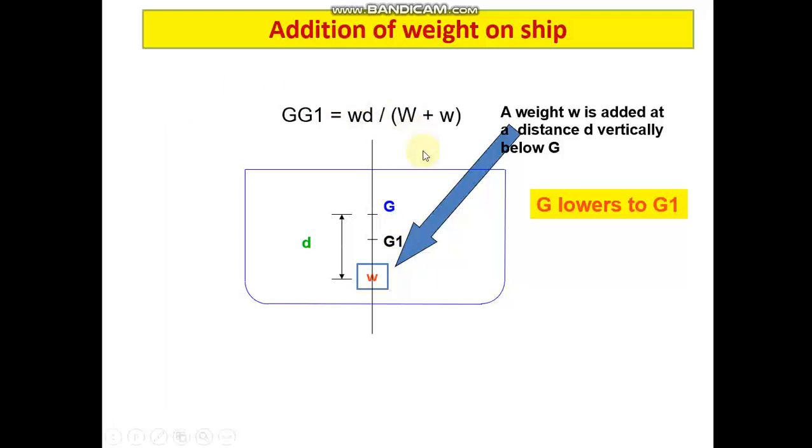The formula seems to be same in both these cases, but the difference is in the location of G1. In the first case, G1 had moved up towards the point where mass was added. In this case, G1 has come down towards the point where the mass has been added.